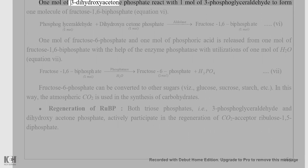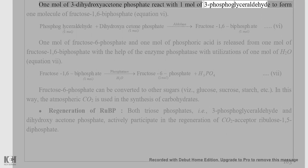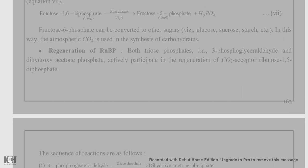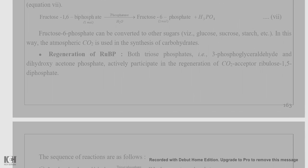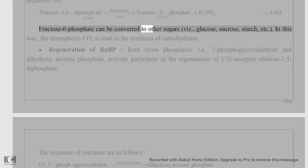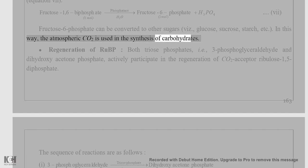One mole of 3-dihydroxyacetone phosphate reacts with one mole of 3-phosphoglyceraldehyde to form one molecule of fructose-1,6-bisphosphate. Then one mole of fructose-6-phosphate and one mole of phosphoric acid are released from fructose-1,6-bisphosphate with the help of the enzyme phosphatase. Fructose-6-phosphate can be converted to other sugars — glucose, sucrose, starch, etc. In this way, atmospheric CO2 is used in the synthesis of carbohydrates.